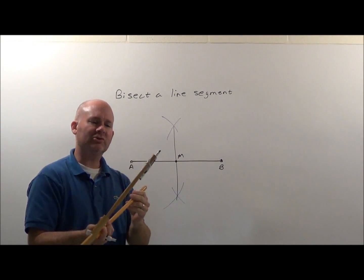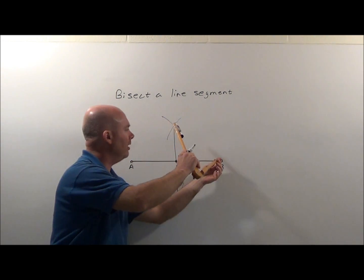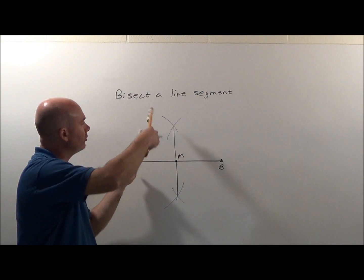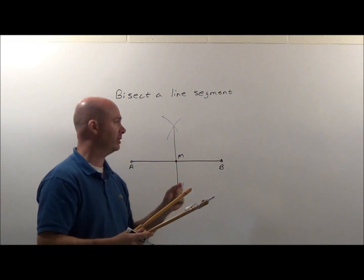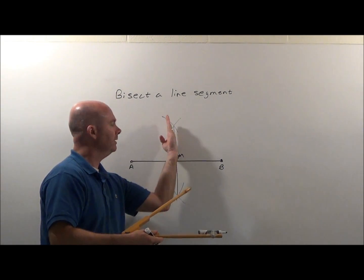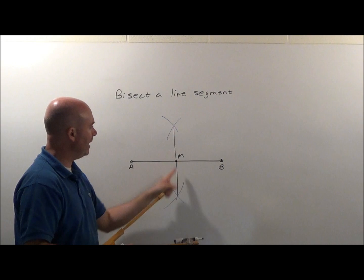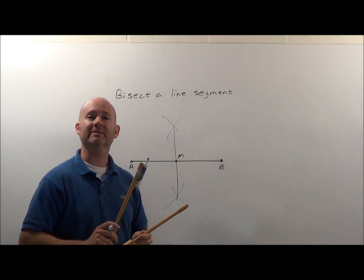Again, always remember if you get confused, you've got to stick the point somewhere on these two points that you're given. Again, you always got to create these arcs, or basically to be honest, these circles is what you're really creating, but again, to save time, we're not going to go all the way around. That's how we bisect a line segment using a compass.